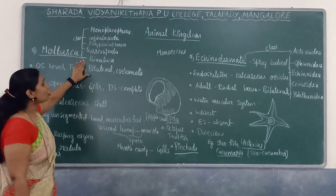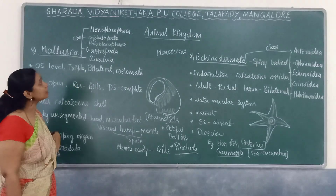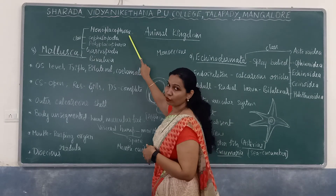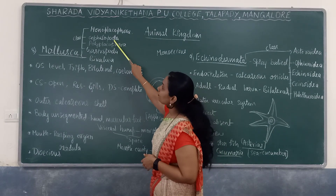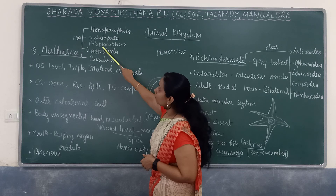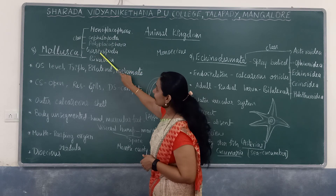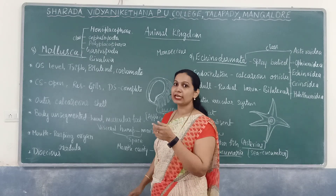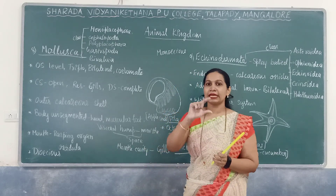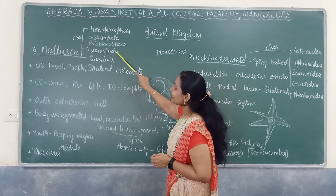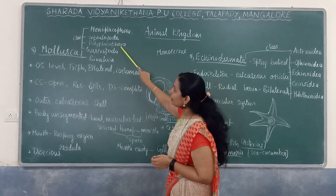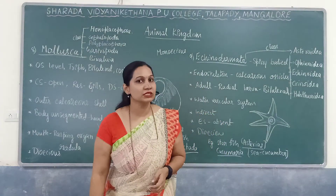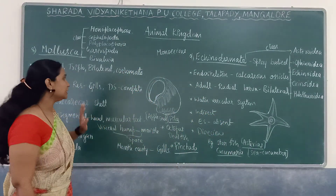Mollusca consists of five classes: Monoplacophora, Cephalopoda, Polyplacophora, Gastropoda, and Bivalvia. Bivalvia refers to two shells, as in the case of pearl oyster.